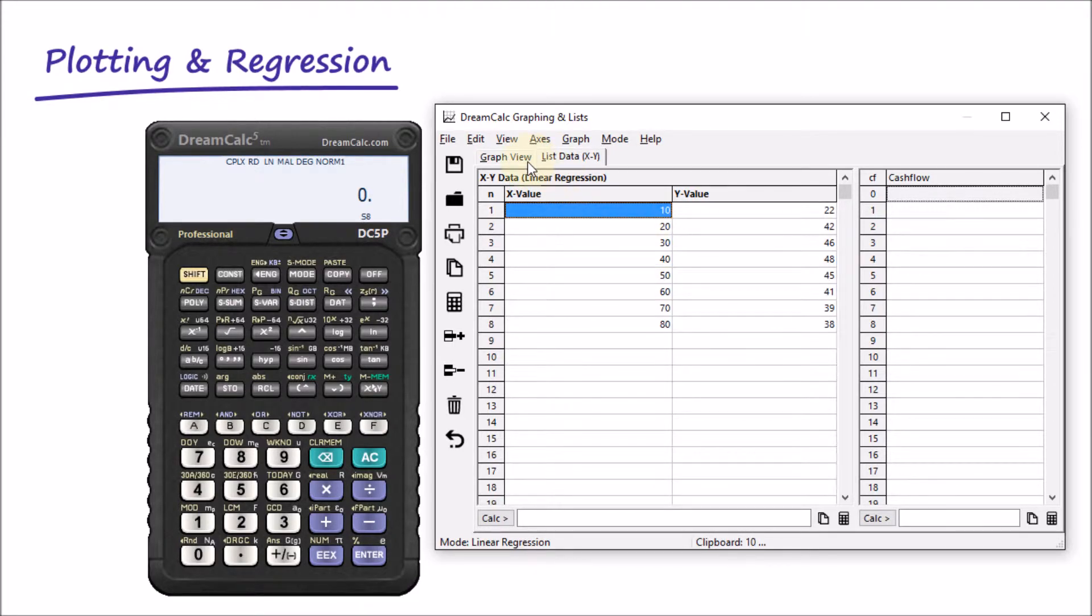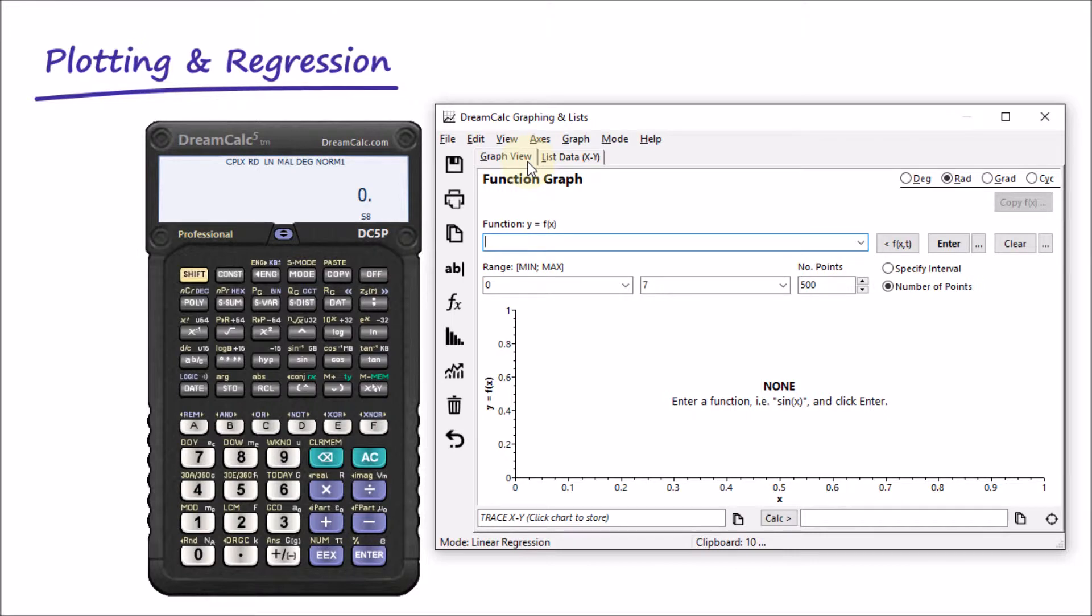If we now go back to the graphing view, we find that it's currently set to function graphing mode. But we can easily change this to XY plotting mode in order to show our data points.